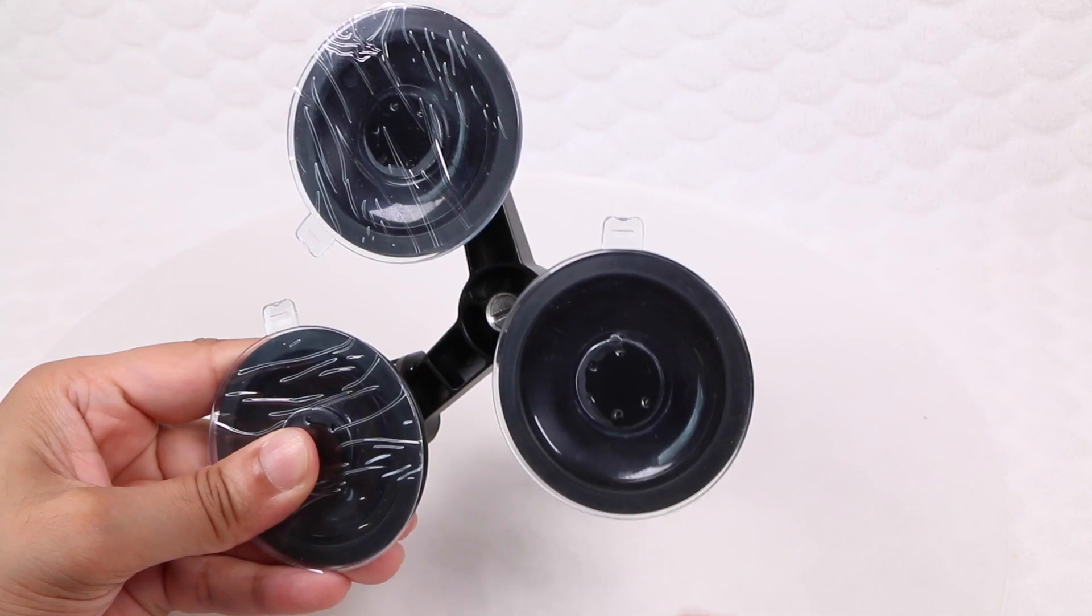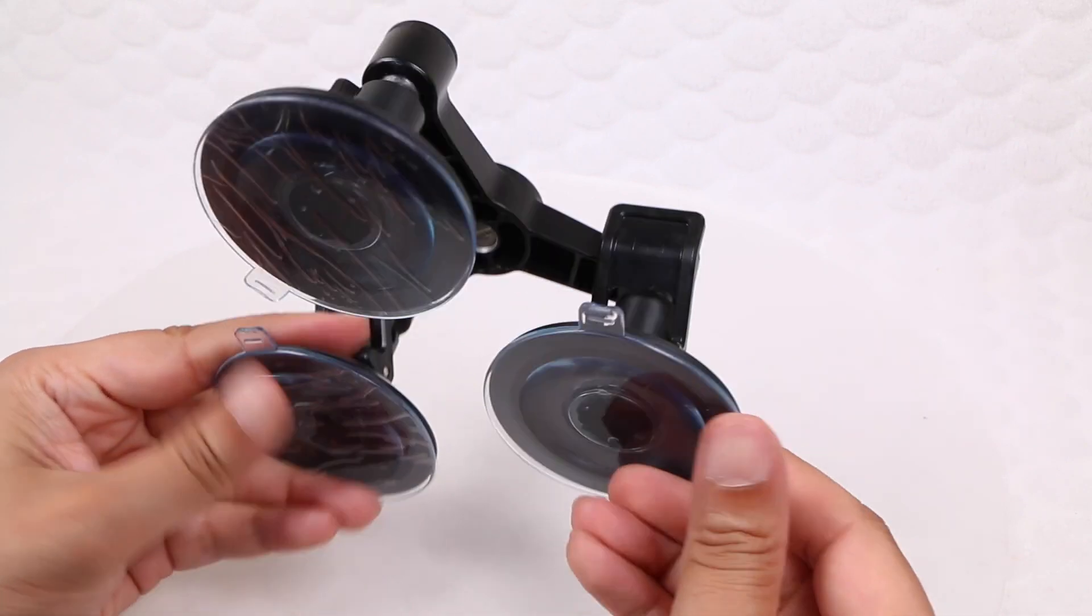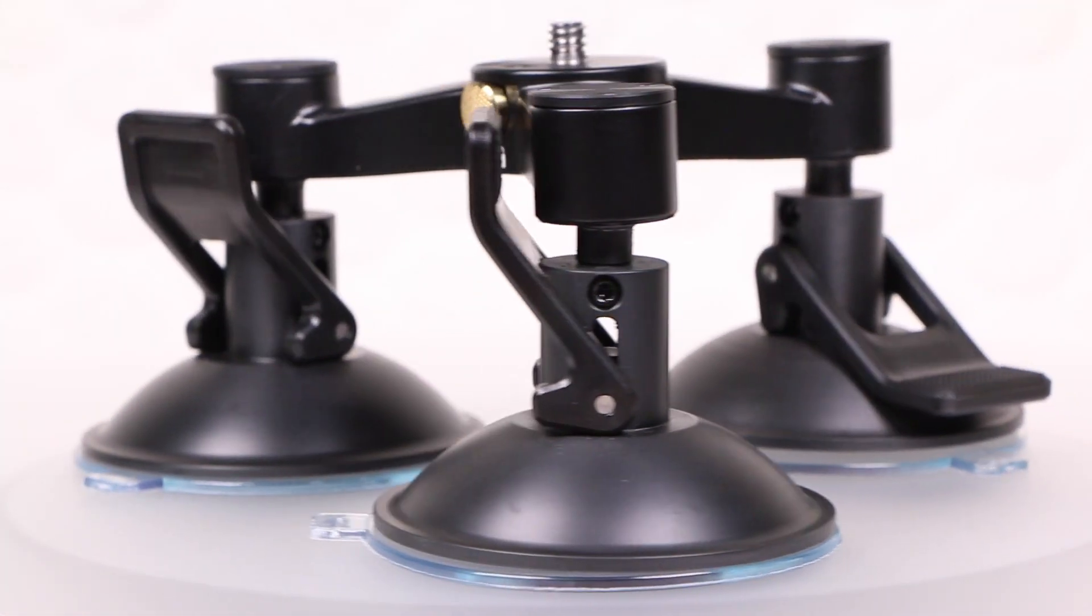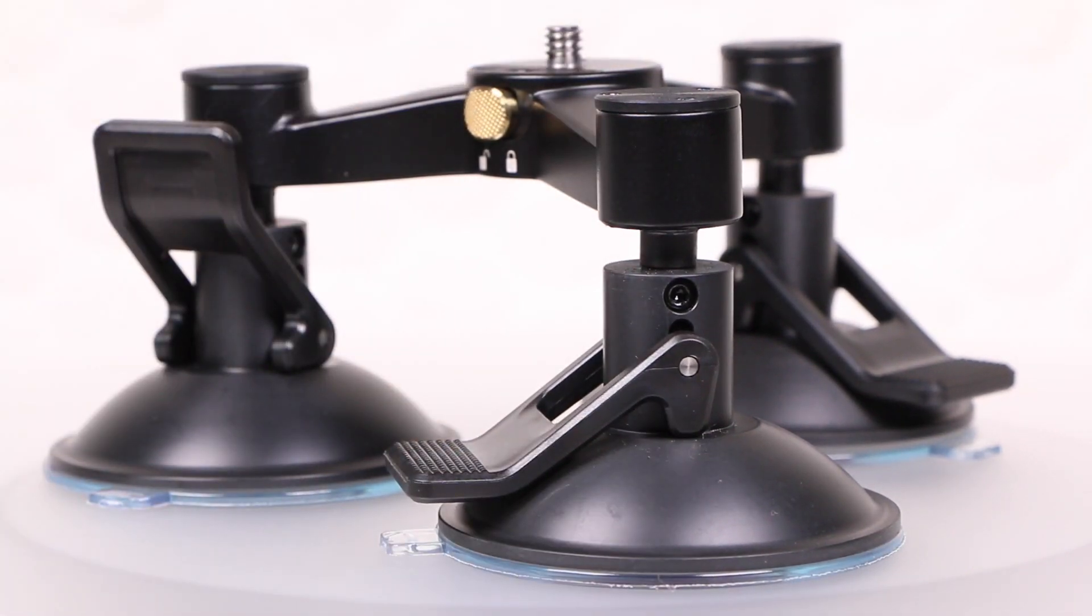The triple suction cup design feels seriously sturdy. Matte black in colour with a robust construction, each cup carries an integrated handle which helps create a very strong suction against a smooth surface, like vehicle panels or glass.